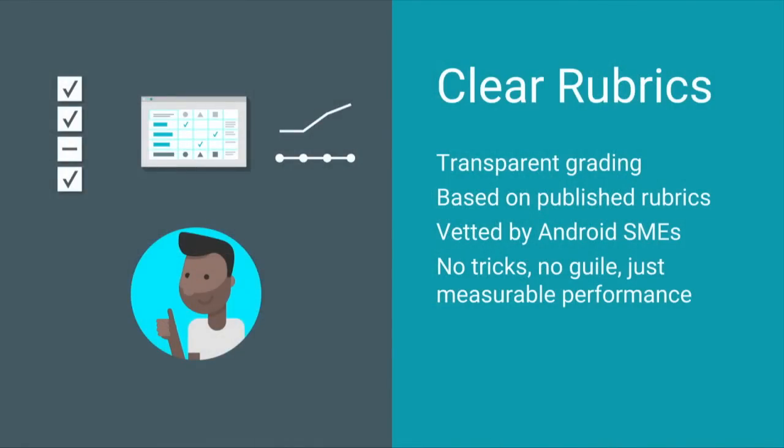One of the most important aspects of this program is how we're using rubrics. The rubrics will be transparent and published — you'll have them as soon as you sign up for an exam, so you'll know exactly what you need to do to pass. It will reduce ambiguity, making it very clear, empirical, and objective how you'll earn the certification. If you're prepared, if you can build an app and you know these rubrics, you should be in good shape. There are no tricks, no guile — just measurable performance.